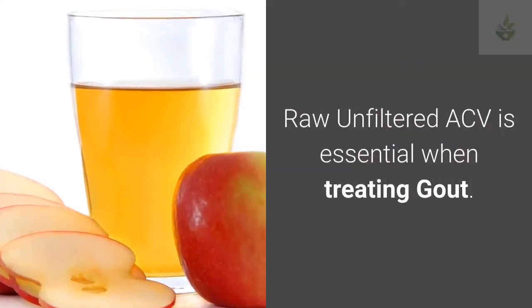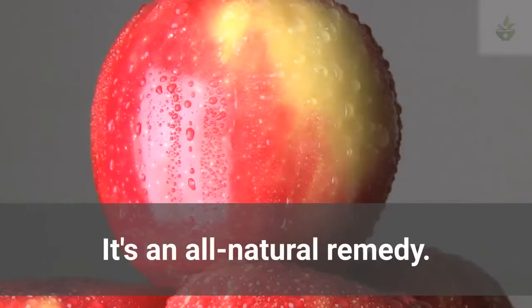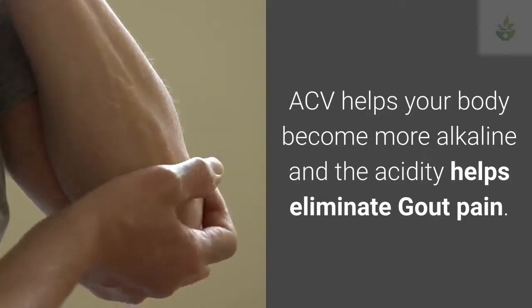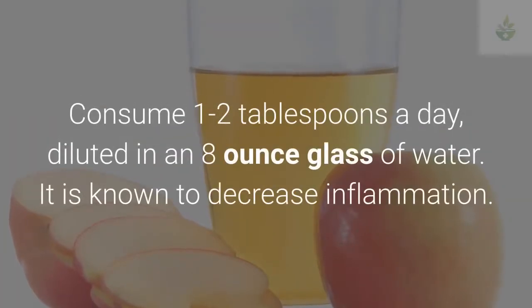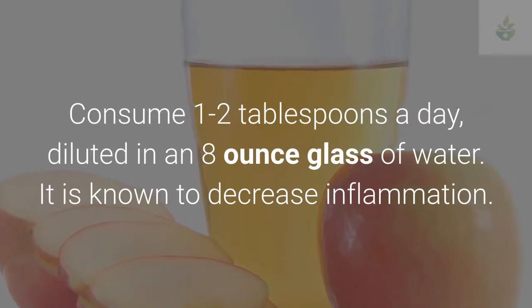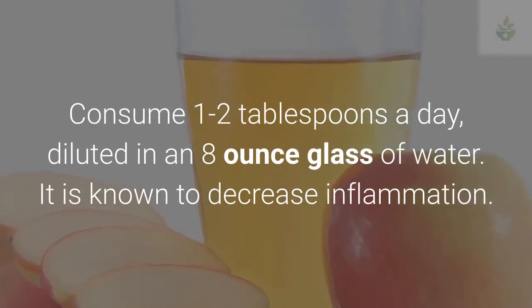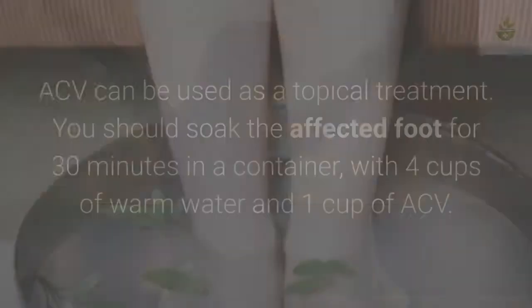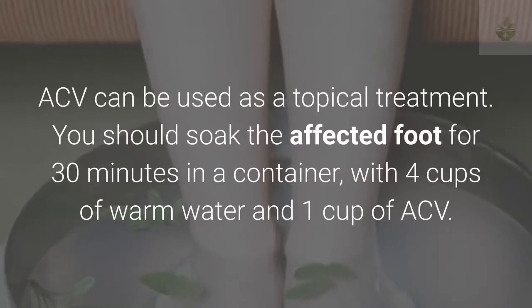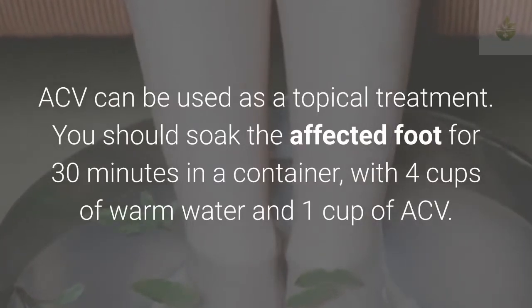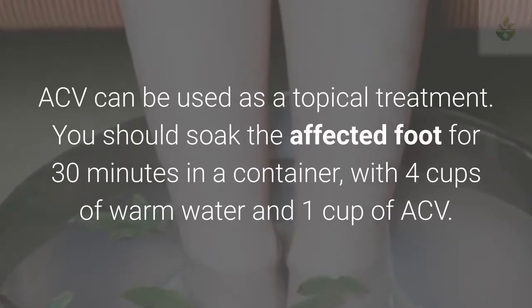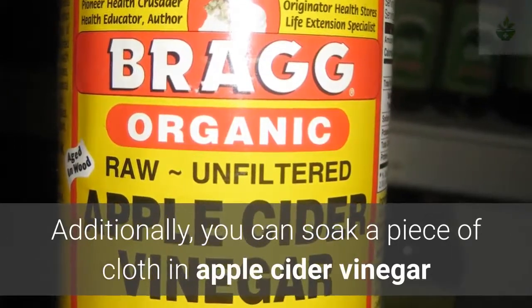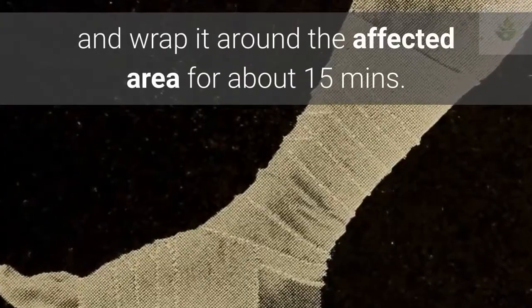Apple cider vinegar (ACV) is an all-natural remedy essential for treating gout. It helps your body become more alkaline, and its acidity helps eliminate gout pain. Consume one to two tablespoons a day diluted in an eight-ounce glass of water — some people drink this two to three times a day for better results. ACV can also be used topically: soak the affected foot for 30 minutes in a container with four cups of warm water and one cup of ACV, or soak a cloth in apple cider vinegar and wrap it around the affected area for about 15 minutes.